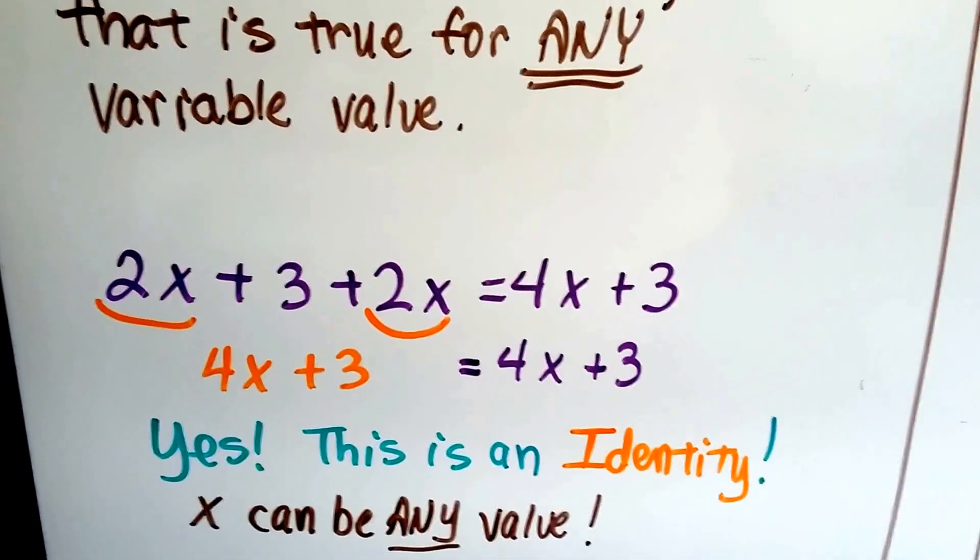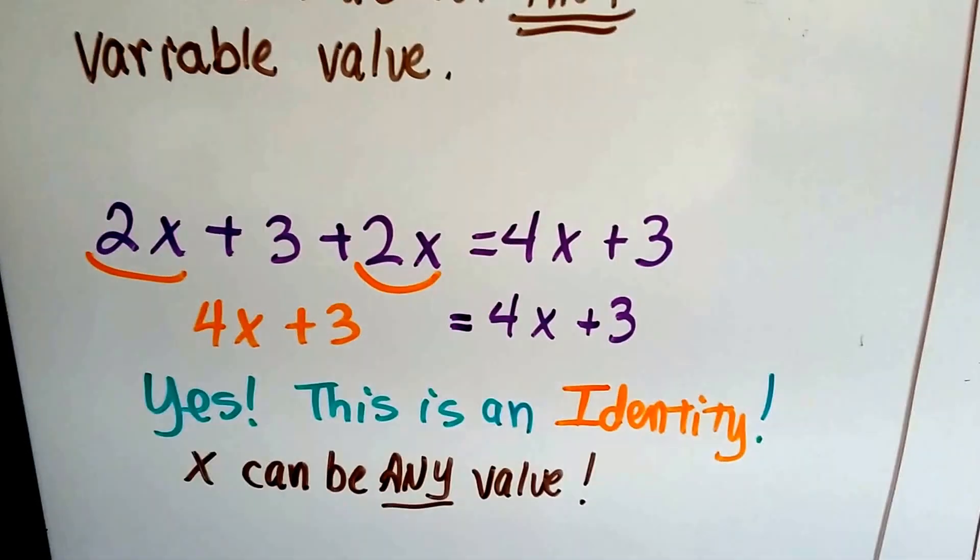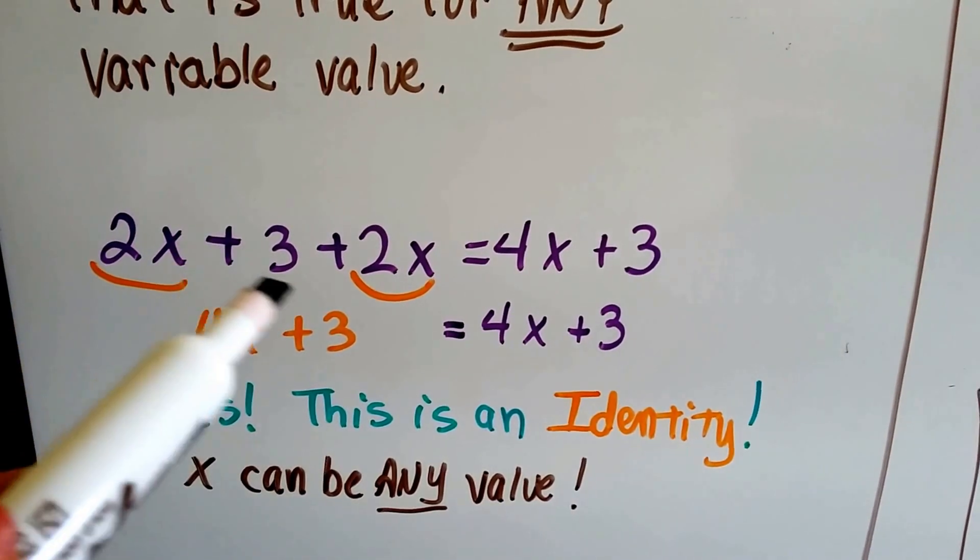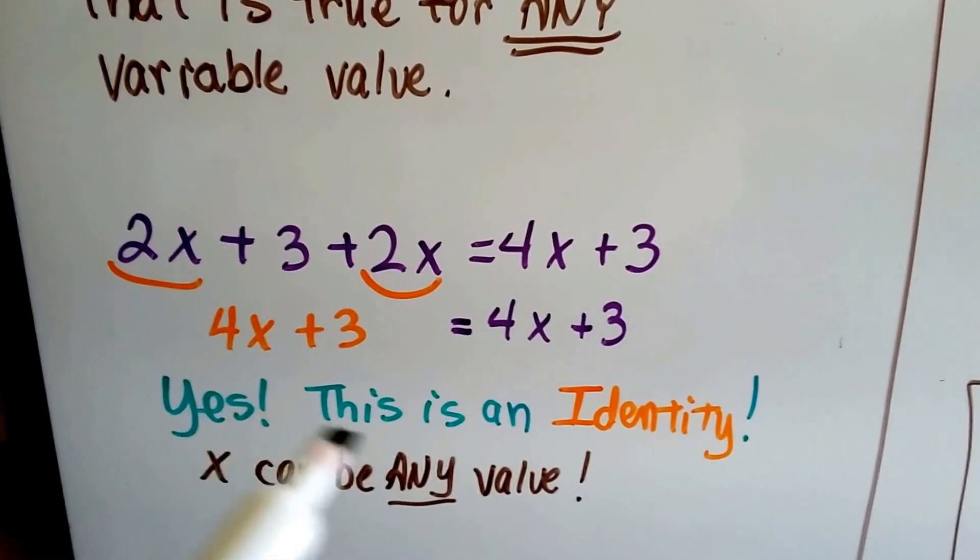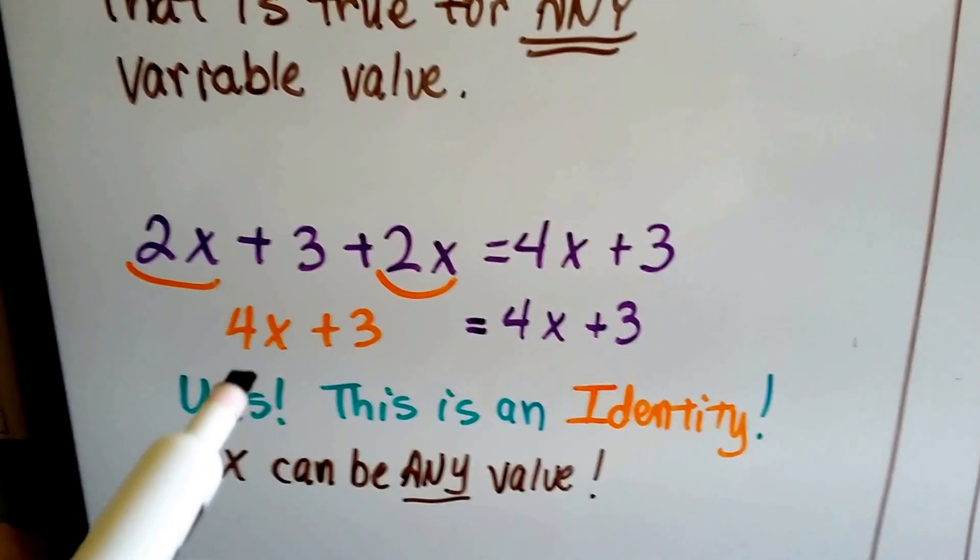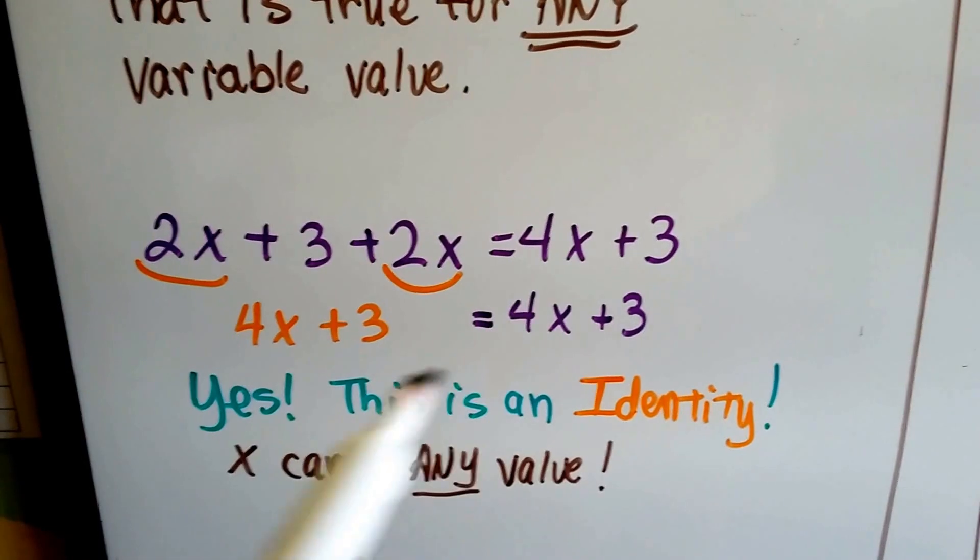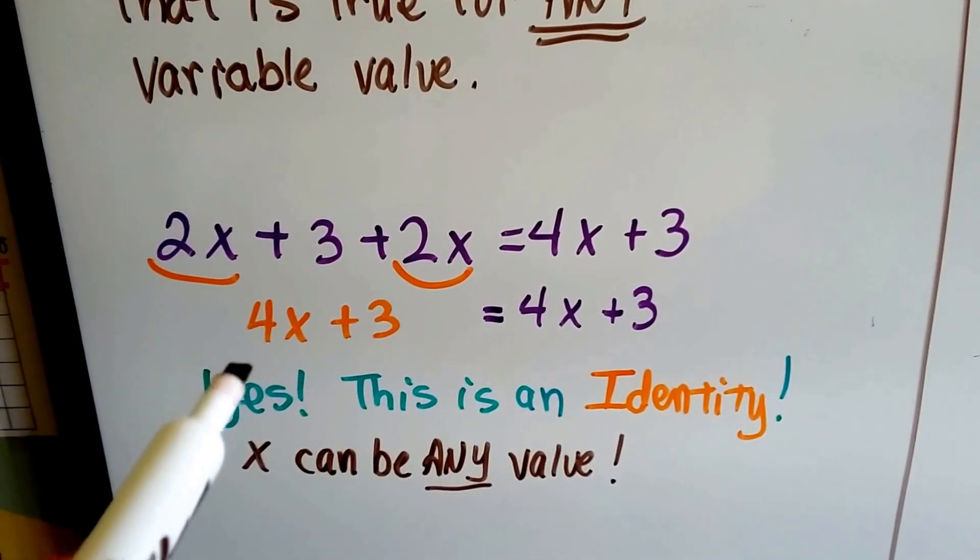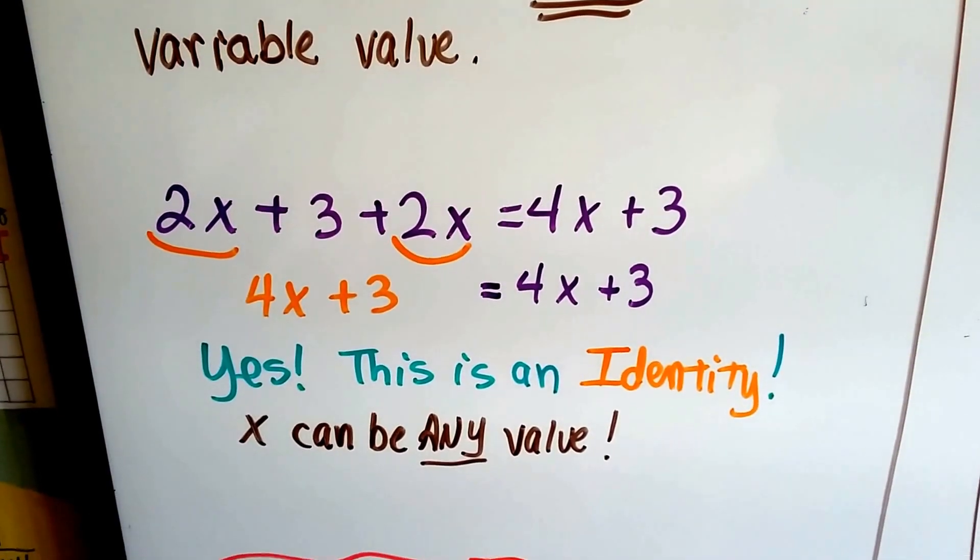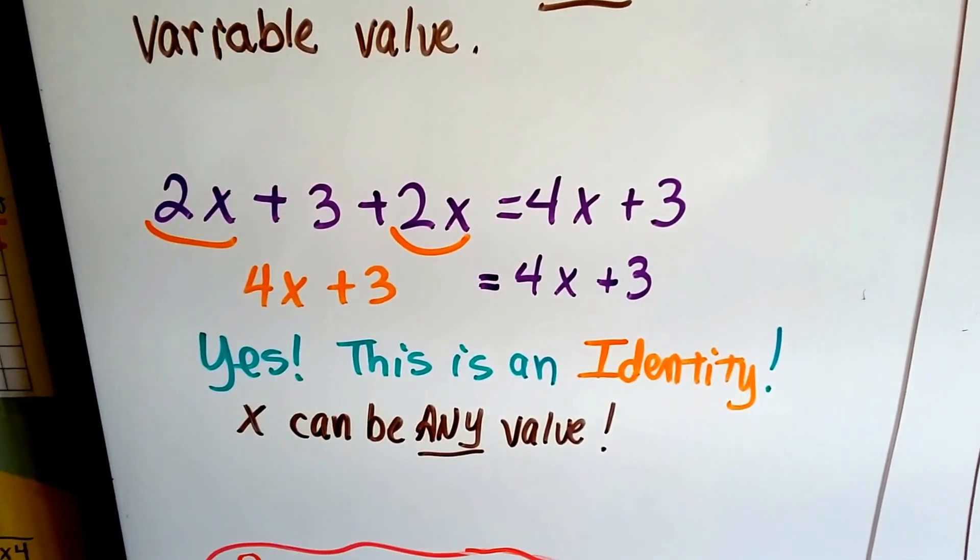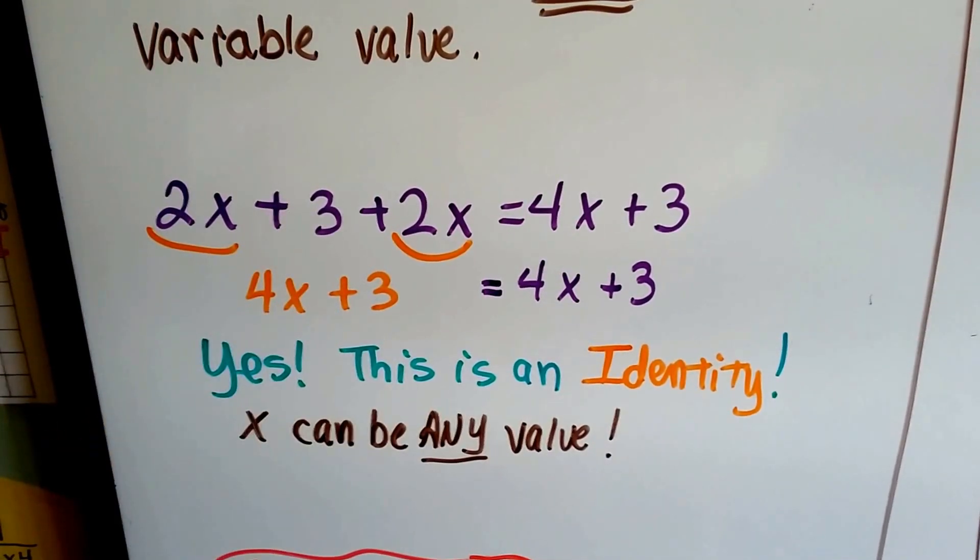Look at this equation. This is an identity because x can be any value. On this side, we've got 2x plus 3 plus 2x. When we combine the like terms, we get 4x plus 3. Well, that's what it is on this side. So if x was a 1, then it would be a 1 on both sides because that's x, and they would stay true. If x was a 2, it would still be true. If x was a 3, it would still be true. If x was a negative 99, it would be true because it's balanced. See, that's an identity.